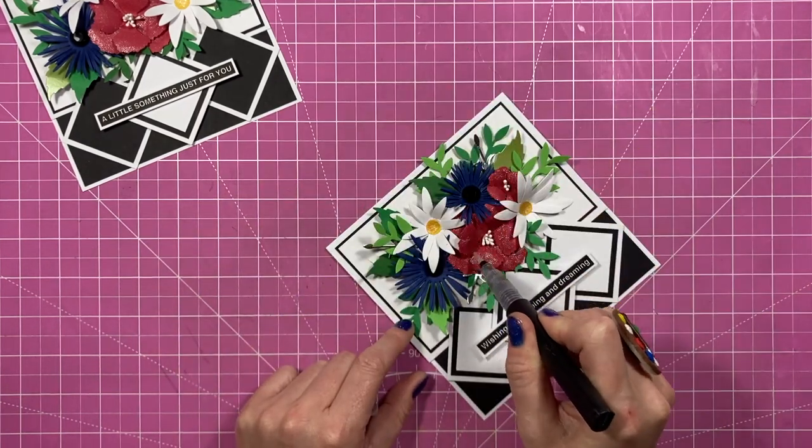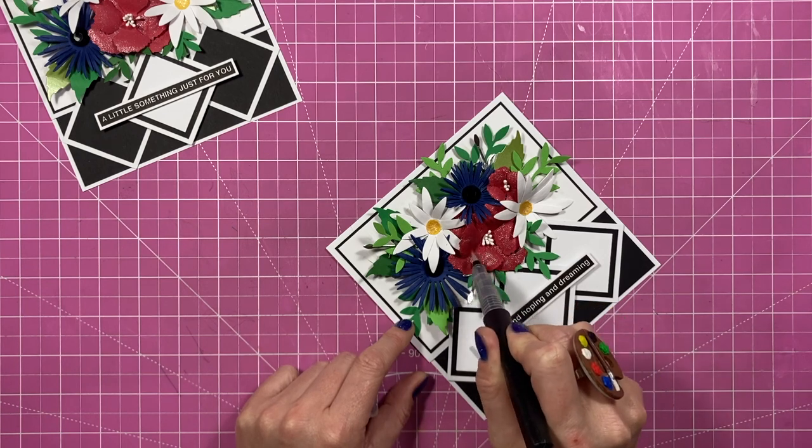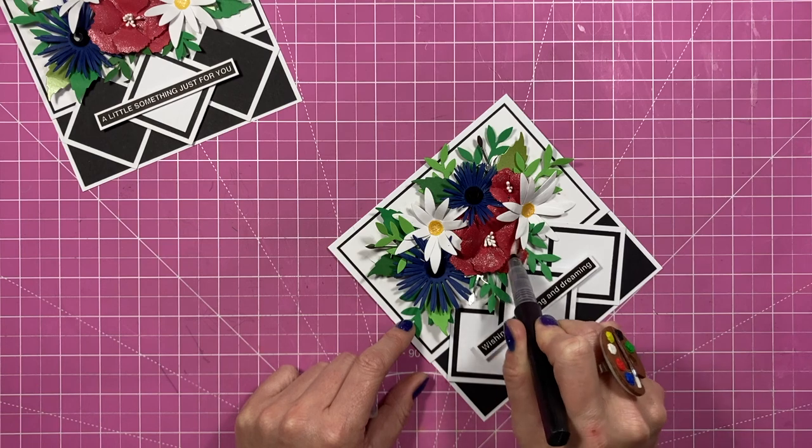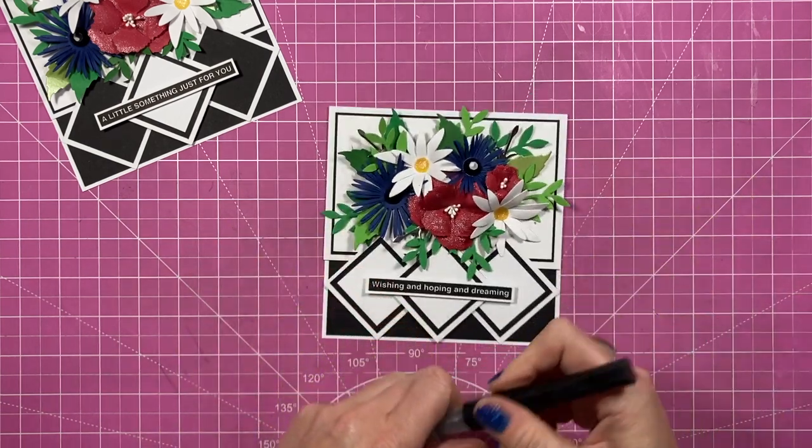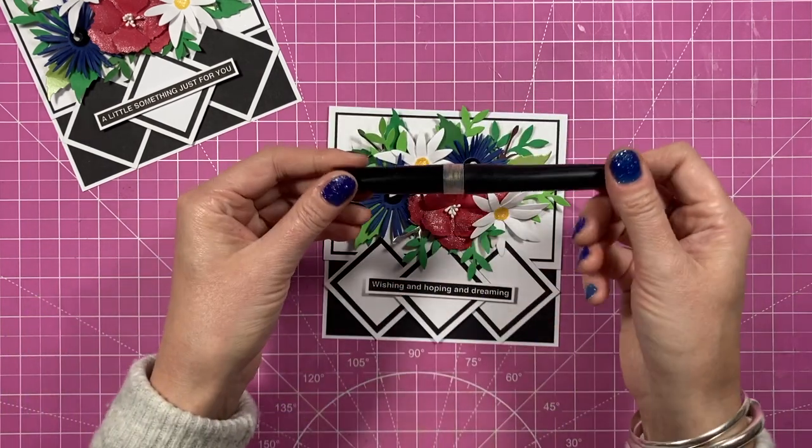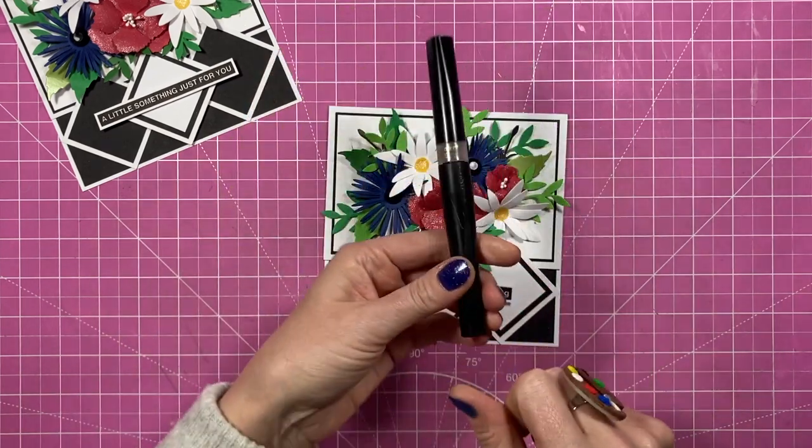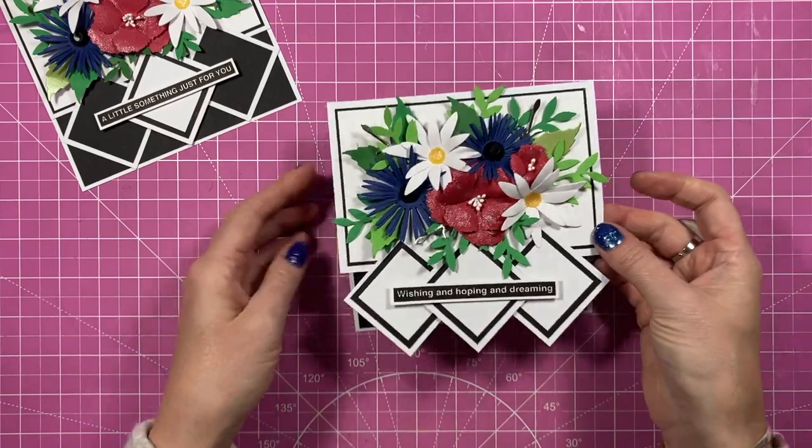So I'm just finishing off the card now with my sparkle pen and I love using this. It will go on a bit darker but it will dry completely clear and then if you want to go over it some more you can layer it up and this is by Spectrum Noir and it is called Crystal Clear. Again I'll link that in the description box below but that's the finished card.